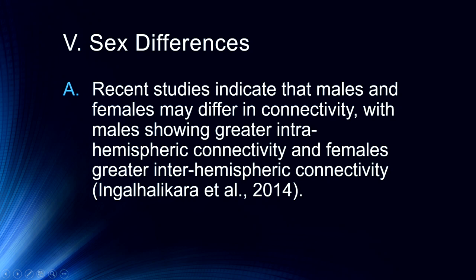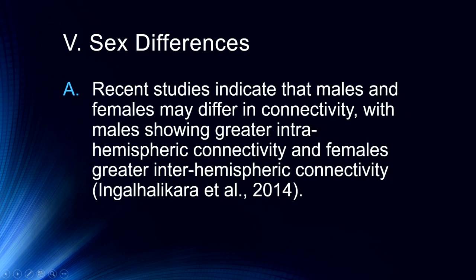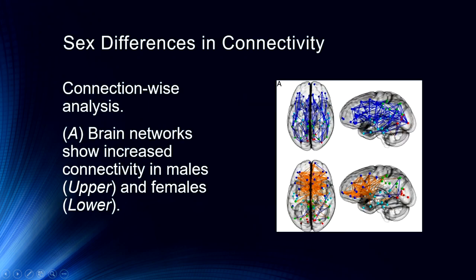That being said, there are some observable differences that can potentially be important. Some very recent work indicates that males and females may differ in connectivity, with males showing greater intra-hemispheric connectivity and females showing greater inter-hemispheric connectivity — which is a really fascinating finding. This is a study from the Proceedings of the National Academy of Sciences. In the upper part of this figure, you can see connectivity maps for male participants showing a lot more intra-hemispheric connections, whereas with women you see greater inter-hemispheric connectivity. There's always the potential for selection bias, and there are follow-up letters with some controversy — worth taking a look at if you're interested. This is from 2014.